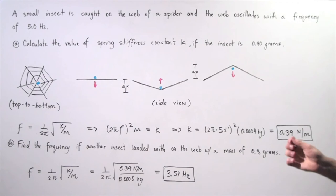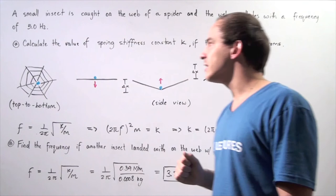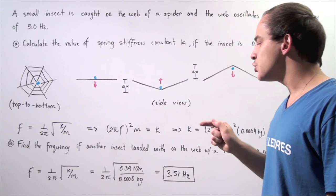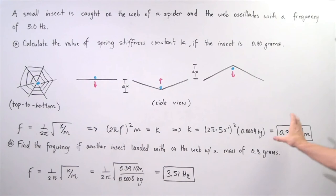So we simply use this formula to calculate the frequency. So the frequency is given by 1 divided by 2π times the square root of 0.39 newtons per meter, which we got in this part, divided by the mass of the insect in kilograms,